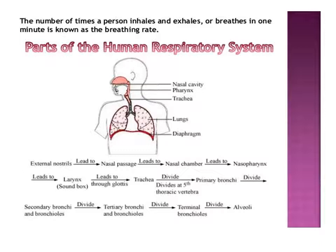Now, the parts of the human respiratory system. Air passes through the external nostrils, leading to the nasal passage, then nasal chambers, then nasopharynx, then goes to the larynx, then the trachea, then primary bronchi, then secondary bronchi, then tertiary bronchi, then terminal bronchi, and finally to the alveoli.